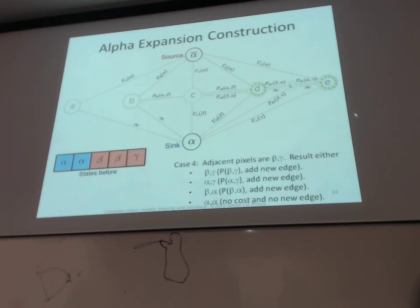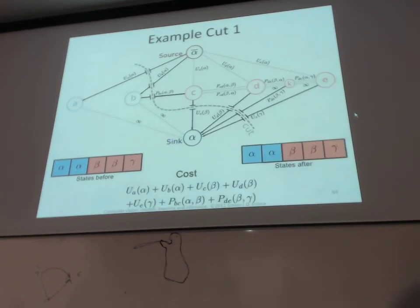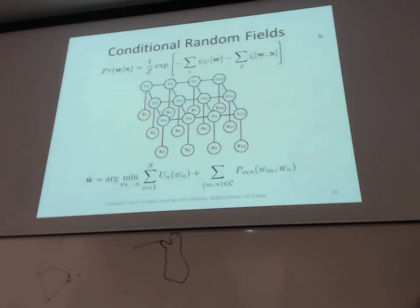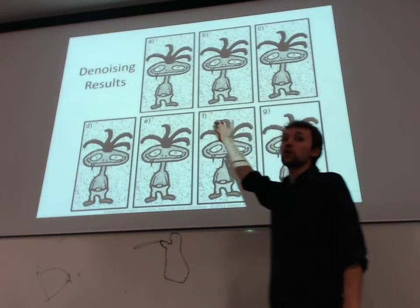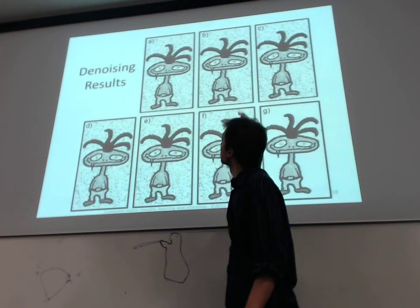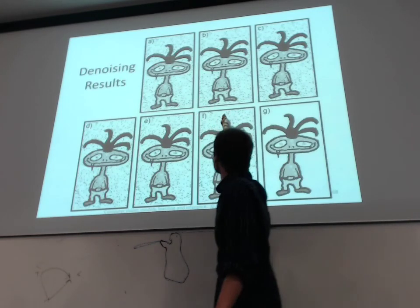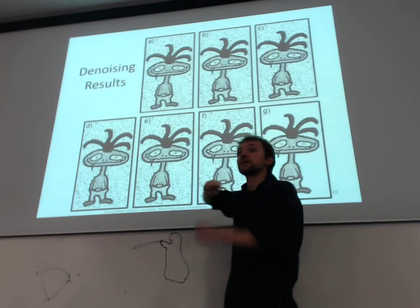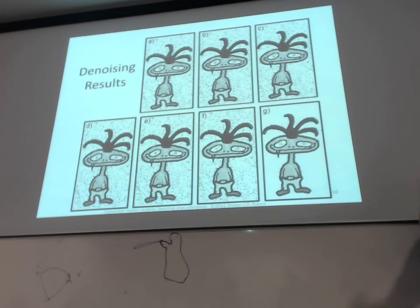With the graph configured this way, you run graph cuts. You have to reconfigure the graph after each alpha expansion iteration — that's the sneaky part. Don't forget the triangle inequality constraint. The result applied to denoising with multiple labels: with a non-convex cost function, after one, two, three, four iterations — each time alpha is choosing one color label such as trousers or shoes or hair color and expanding just that label — you eventually end up with a nicely denoised image.